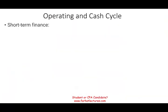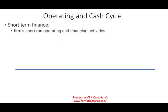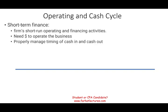Operating and cash cycle deals with the short-term financing of the company. In other words, we need money to operate the business on a short-term basis — pay our payables, pay our employees, manage our suppliers, and so on. We want to properly manage the timing of cash: how long it takes us to receive cash and when we have to pay it, so we can manage those payments and inflows properly.